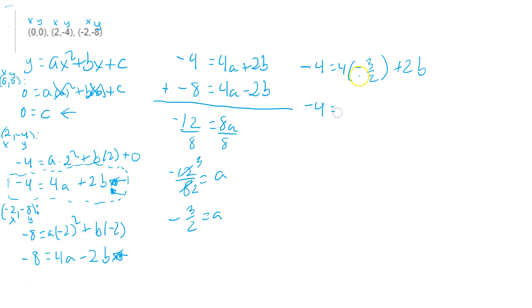So this is now -4 equals... You can simplify again. You can divide the 2 from the bottom. 4 divided by 2 will leave a 2 up top. So it gives you -4 equals 2 times -3 plus 2b.